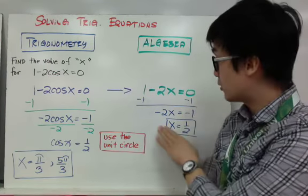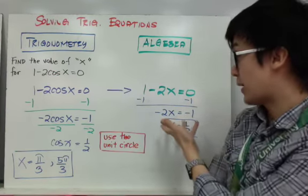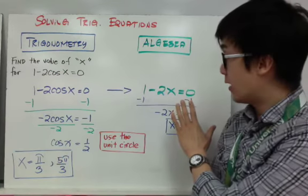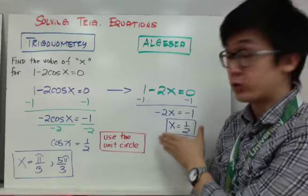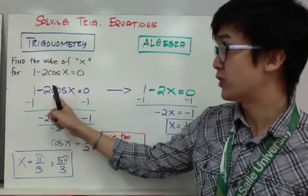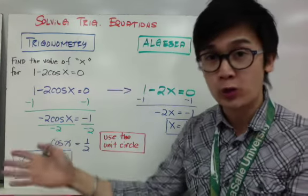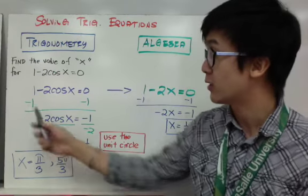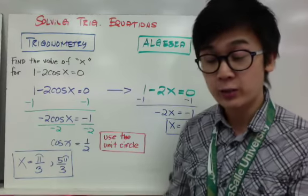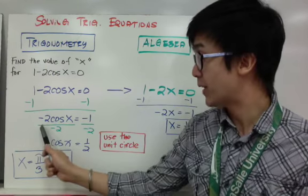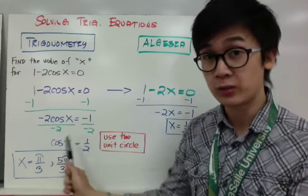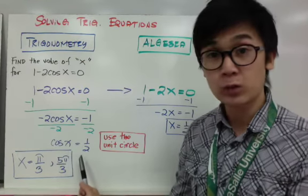To solve the algebra version: subtract 1 from both sides, then divide both sides by negative 2, giving x = 1/2. Now translating back to trigonometry — instead of just x, we have cosine x. So we subtract 1 from both sides to isolate cosine x, giving negative 2 cosine x = negative 1, then divide both sides by negative 2, so cosine x = 1/2.